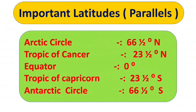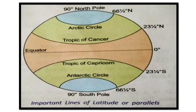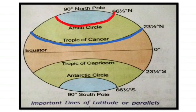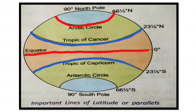Now let's look at some important latitudes. They are: the Arctic Circle at 66.5 degrees north; the Tropic of Cancer at 23.5 degrees north; the Equator at 0 degrees; the Tropic of Capricorn at 23.5 degrees south; and the Antarctic Circle at 66.5 degrees south. This image will make the lines of latitudes clear. Let's recall: Arctic Circle at 66.5 degrees north, Tropic of Cancer at 23.5 degrees north, Equator at 0 degrees which divides our earth into two equal parts, Tropic of Capricorn at 23.5 degrees south, and Antarctic Circle at 66.5 degrees south.